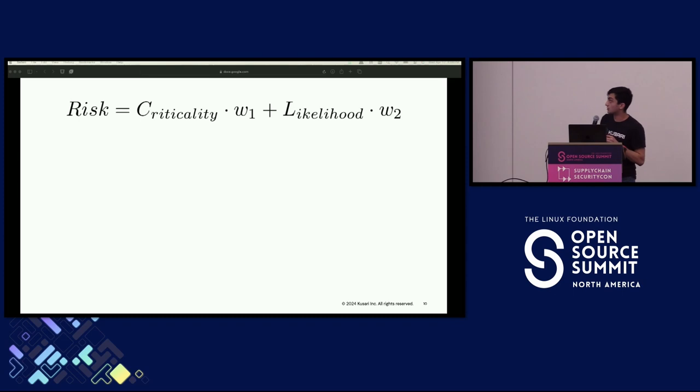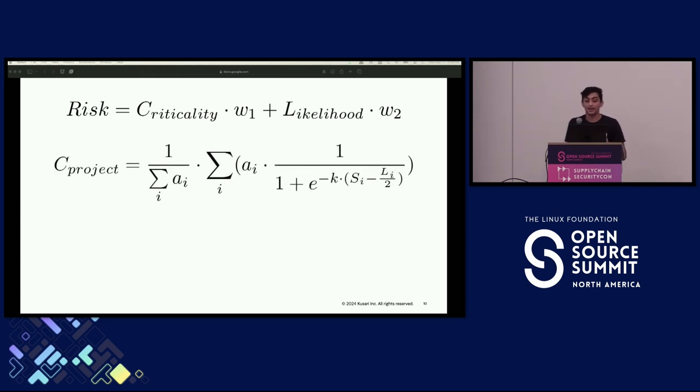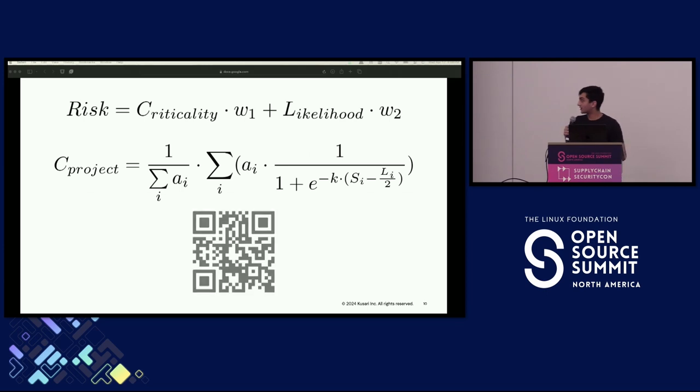Finding the risk for a project is actually pretty simple. You take the criticality and multiply by weight, then add it to likelihood multiplied by another weight. Now, finding the criticality and likelihood at normalized values is a little more complicated. This is a modified sigmoid function on top of the open SSF criticality score algorithm developed by Rob Pike. I'm not going to explain this because it would take too long. But, you can scan the QR code to go to the proposal which explains it in detail. Note that this algorithm does use weights to prioritize between different metrics. And, we are creating a default set of weights. But, feel free to modify these values at any time to suit your needs.